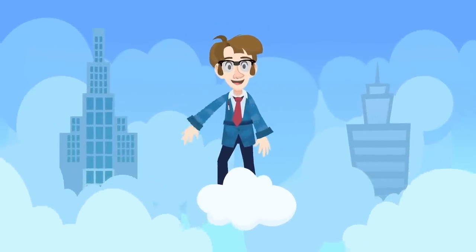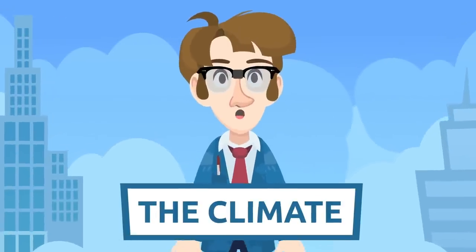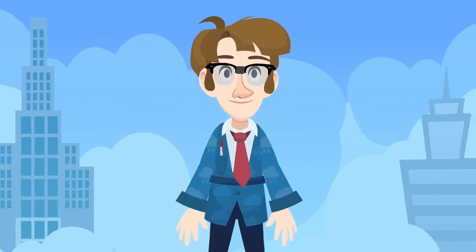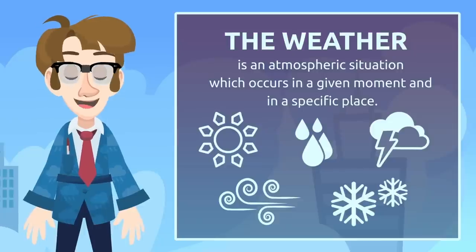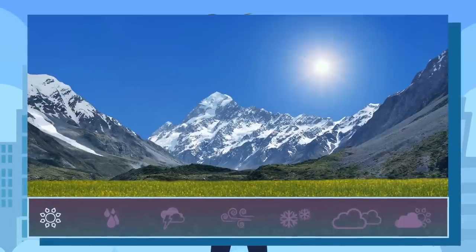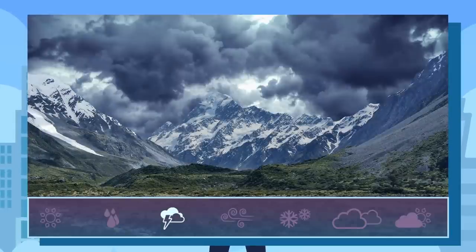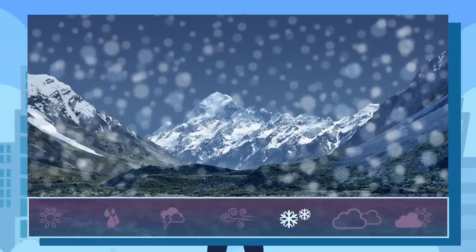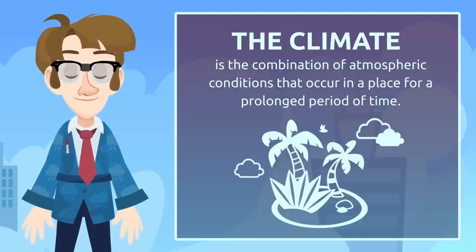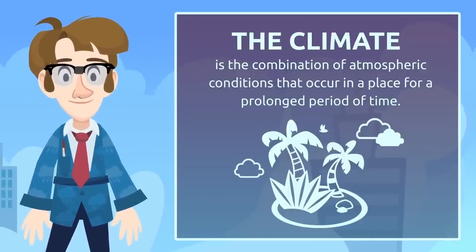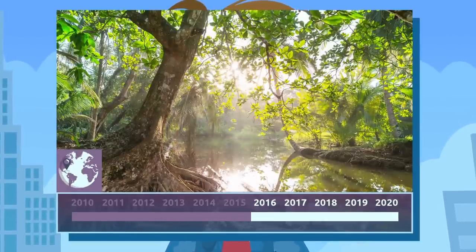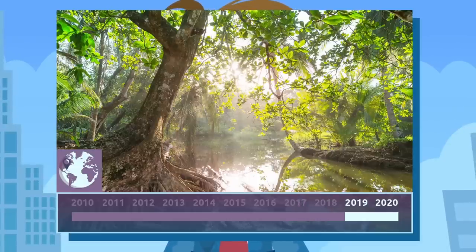Today we're going to learn what climate is. Climate and weather are closely related but different concepts. Weather is an atmospheric situation that occurs at a given moment in a specific place — look outside and observe whether it's cold, hot, rainy, cloudy, or windy. In contrast, climate is the combination of atmospheric conditions that occur in a place over a prolonged period of time. For example, the predominant climate in Central American woods is the tropical climate, because these are hot and humid places with heavy rainfall during summer.